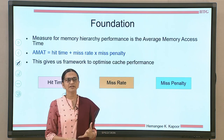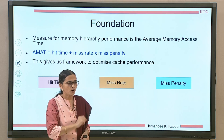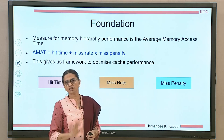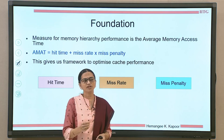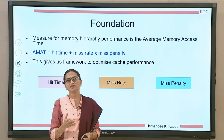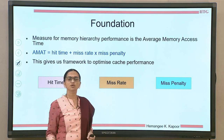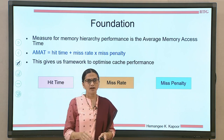To address any optimization issue, we need to understand what are the different parameters which are in our hand to change. The performance of a memory hierarchy is defined among other factors mainly by the average memory access time — that is, how long it takes to go and read the memory to bring the data to the processor.